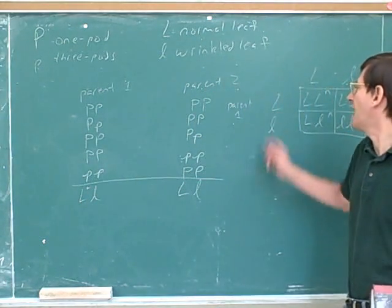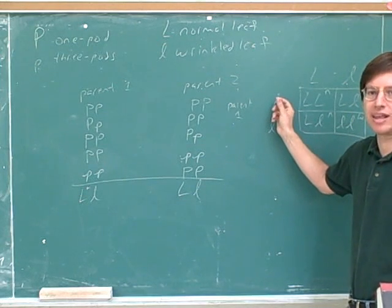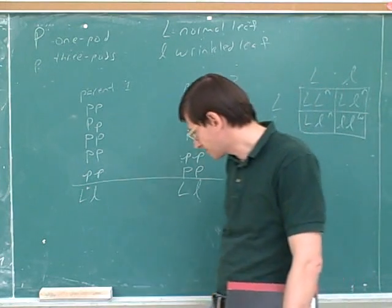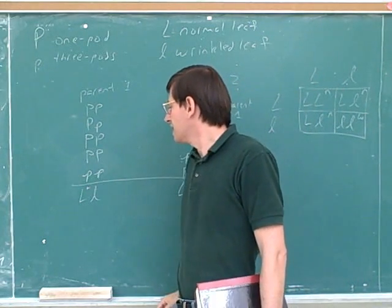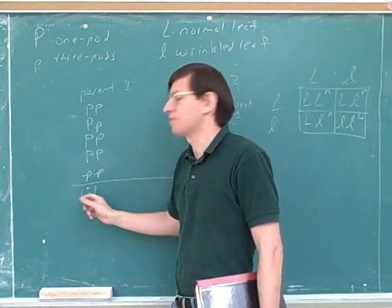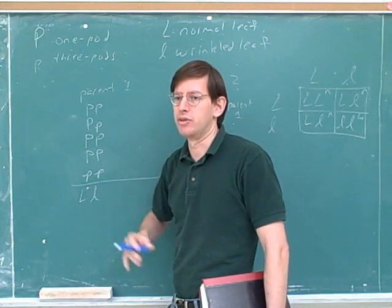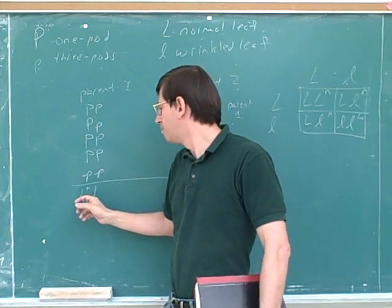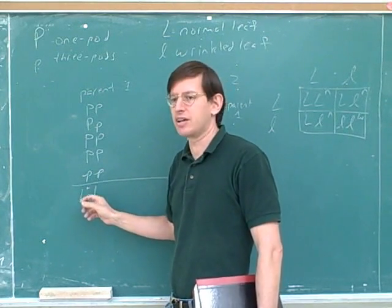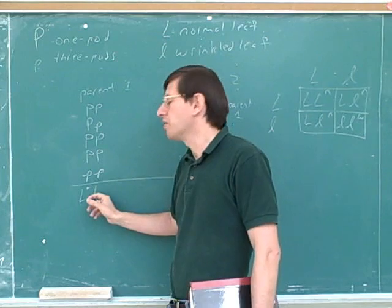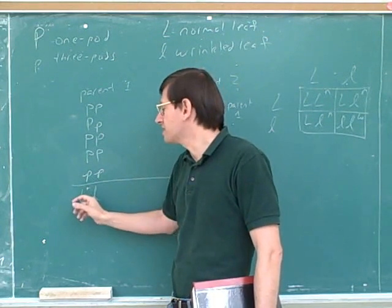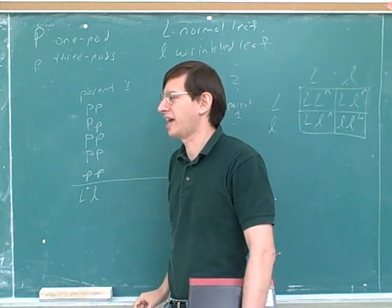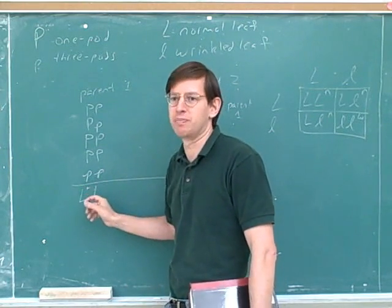So this represents that half of the gametes will get one allele and half will get the other allele. Another way to phrase that: in the parent's somatic cells — remember, somatic cells are the normal cells, not the gametes — both chromosomes are present. The somatic cells have both chromosomes. However, when you make the gametes, these segregate away from each other. One allele goes to one gamete and one goes to the other. It's a kind of fancy, pompous name for a very simple idea.